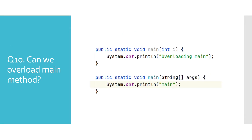Can we overload the main method? The main method is the starting point of any Java program — without that static method we cannot start our application. But since it's so special, can it be overloaded? We can see that Java doesn't report any compile time errors. One thing to keep in mind is that while we may have multiple static main methods, only one of them will be the entry point. The JVM will look up the specific signature of the main method — the one that receives a single parameter which is an array of Strings.